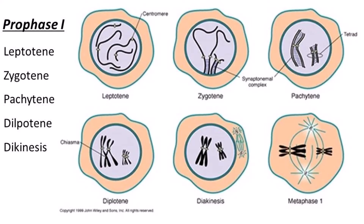Second is zygotene. In zygotene, homologous chromosomes start pairing. This pairing is called synapsis. The synaptonemal complex develops to hold chromosomes in place during the pairing. Each chromosome's chromatid arm divides and forms a structure called bivalent or tetrad. Homologous means the chromosomes which are exactly similar to each other — similar in size, similar in shape, and similar in the genetic material present on both chromosomes.